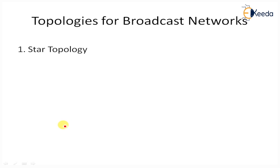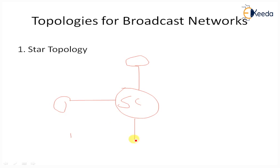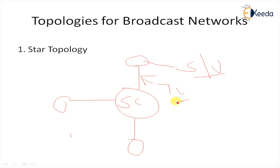In star topology, nodes transmit on different wavelengths and are connected to a passive star coupler via two fibers. Consider one star coupler at the center with many nodes connected to it. Each node is considered a station — S for station, U for user. The link connected to the star coupler is known as a trunk line.